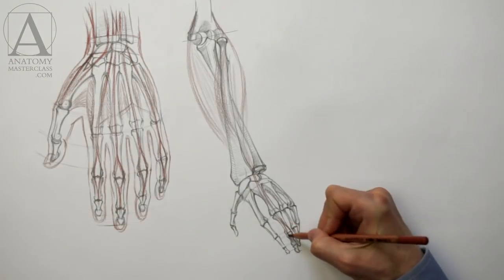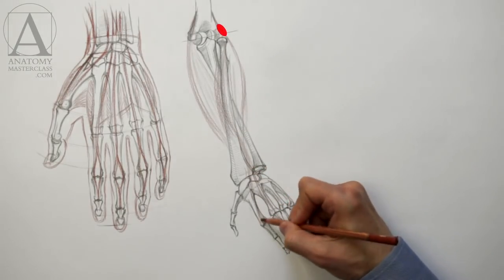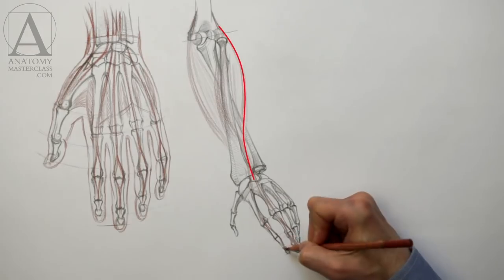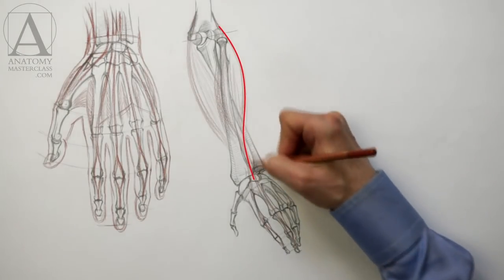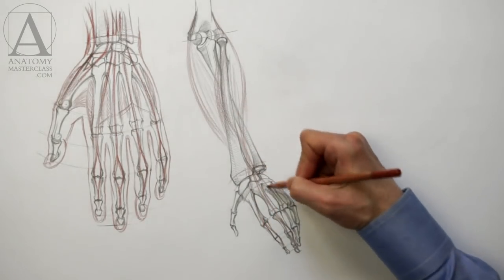The extensor group of the lower arm originates at the outer, lower edge of the humerus. It travels downward to the backside of the hand. The main function of this muscle group is to extend the hand.